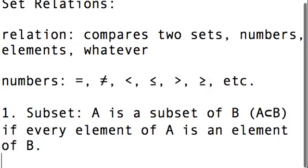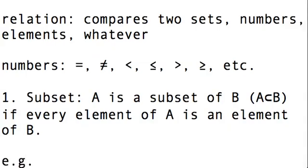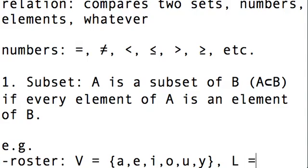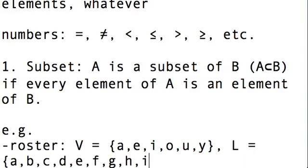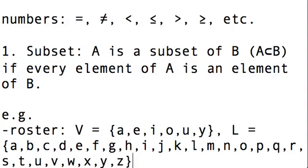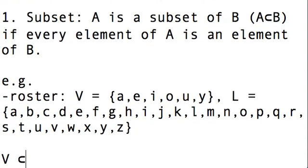So let's look at some examples of this. How do I actually go about showing that something is a subset? Well, let's look at an example using the roster method. Let's take V to be the vowels, which are A, E, I, O, U, and Y. And let's take L to be all letters. I know my alphabet. Great.